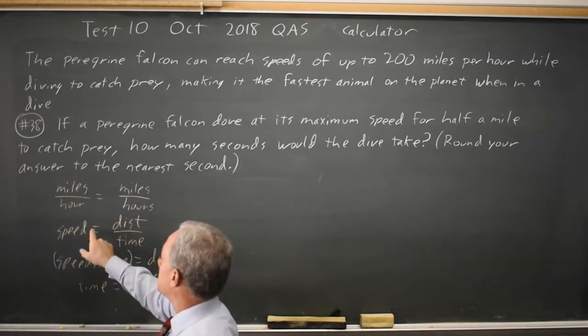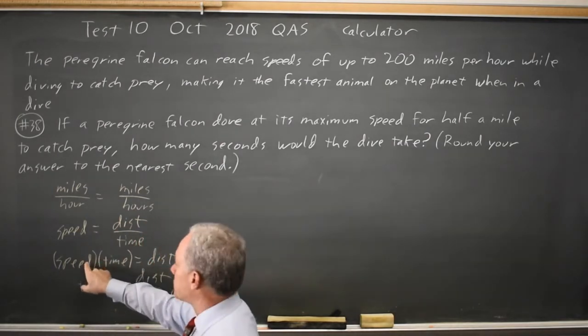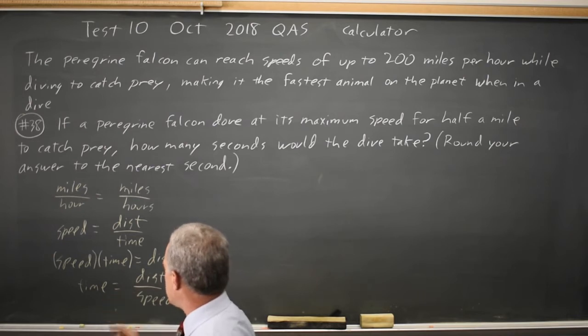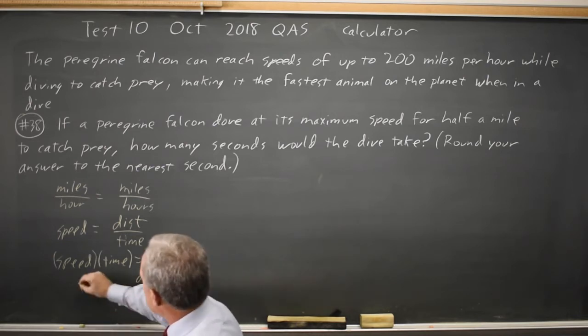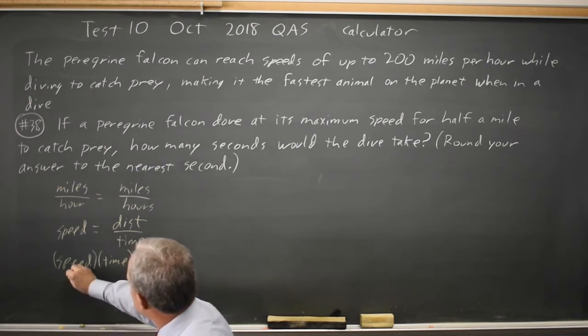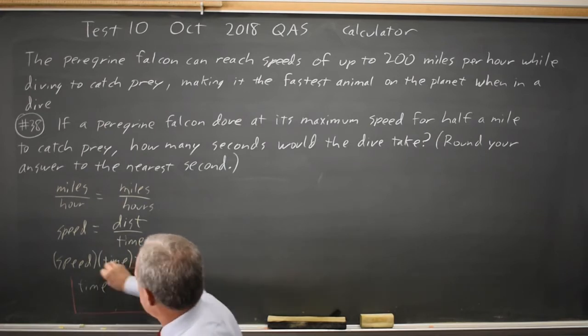To get from this equation to the second, I multiply both sides by time. To get from the second equation to the third equation, I then divide by speed. And this is the equation I'm going to use because College Board is asking for a time.